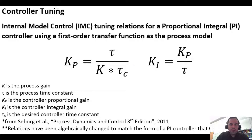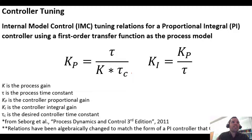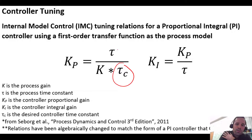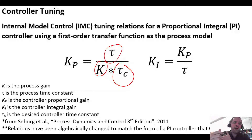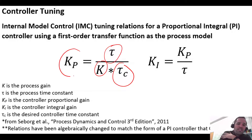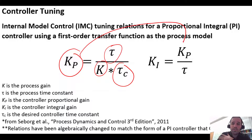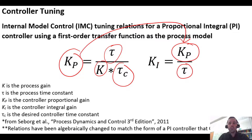We could be conservative and set tau_c to something larger than our natural process time constant — say five minutes instead of one minute — which would mean our controlled system takes even longer to respond. Once we pick tau_c and plug in the process parameters, that gives us our controller proportional gain Kp. We then plug Kp and the process time constant into the IMC formula to get our controller integral gain Ki.